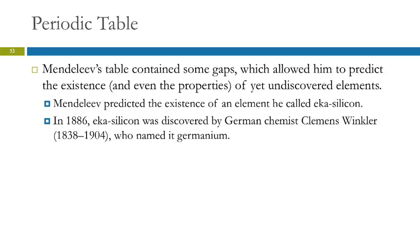That's a good question. So he was able to predict the existence of it because when he lined up the elements by their properties, there were gaps. And then what he did is he looked at the properties of the elements on each side and the elements on the top and the bottom, and he was able to predict things like density and melting point and reactivity just based on the things around it.